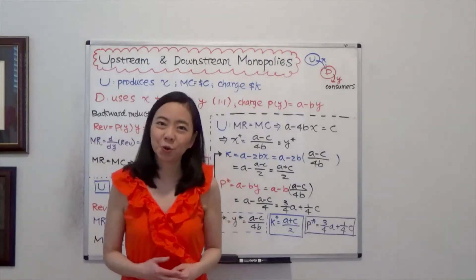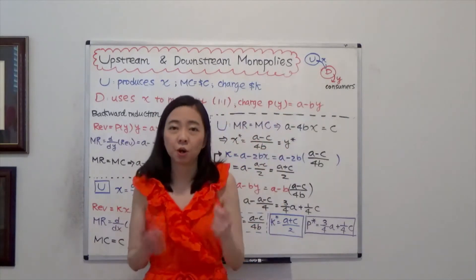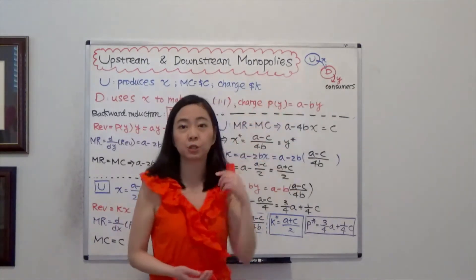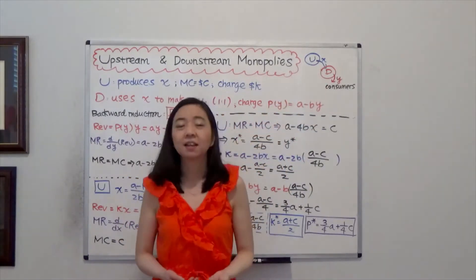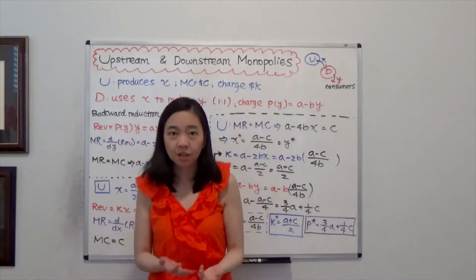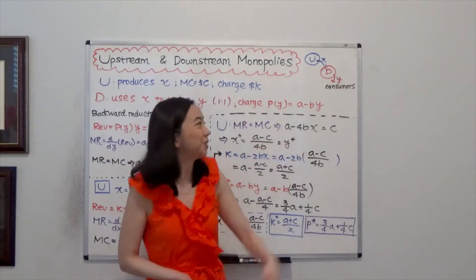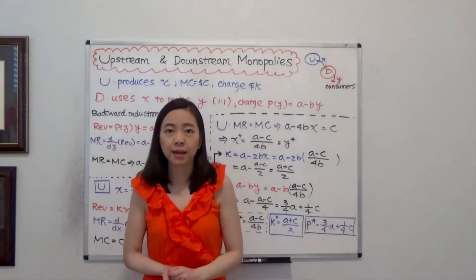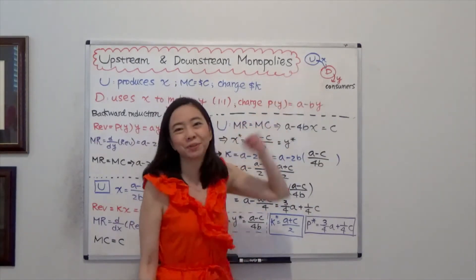So here's a story. We have two companies, Company U and Company D. They're both monopolies. Company U is going to produce product X and sell X to Company D. Company D is going to use X as an input to produce product Y and sell product Y to the general consumers. And we're going to solve for the profit-maximizing quantity and price for both Company U and Company D.